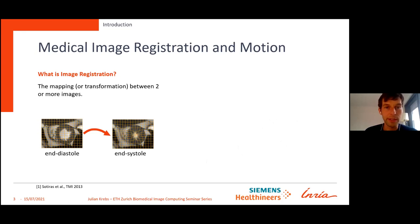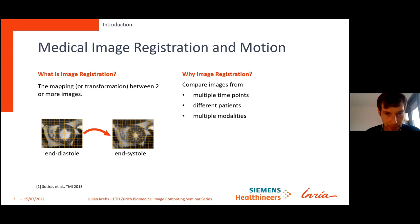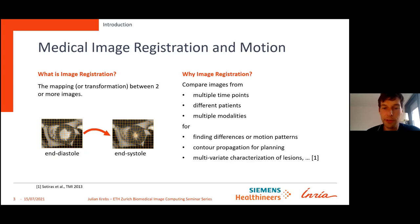Let me start with a brief introduction to image registration and motion, just to build up for the generative motion models. Image registration is a mapping between two or more images — we want to know where each pixel in one image goes in the other. We need this to compare images from multiple time points, different patients, multiple modalities, in order to find differences, propagate contours, or find motion patterns. All of these should help the clinician in diagnosis, prognosis, and therapy.